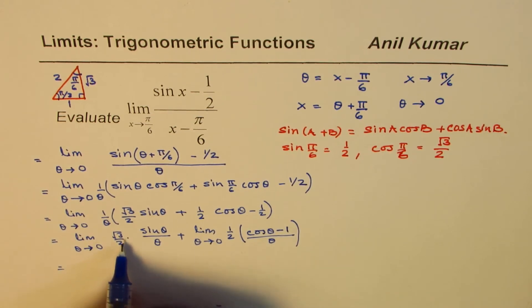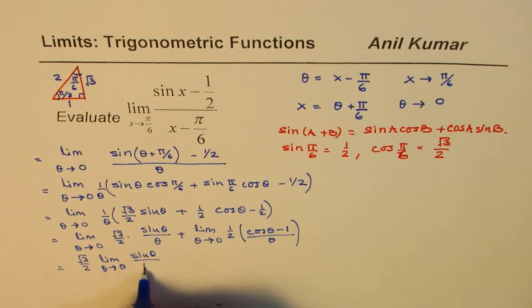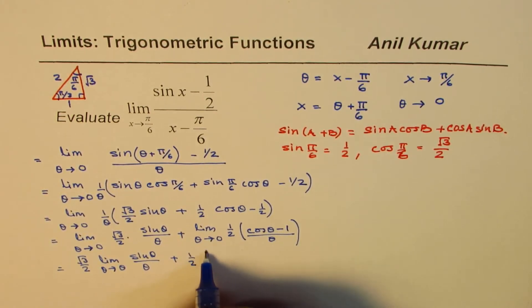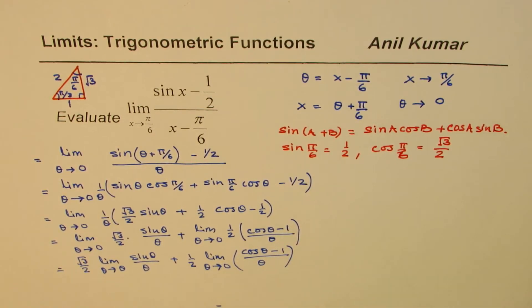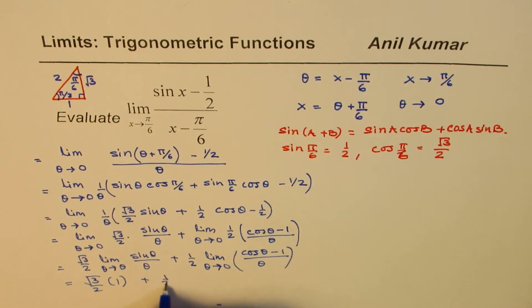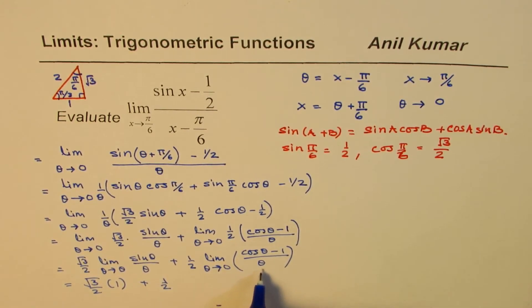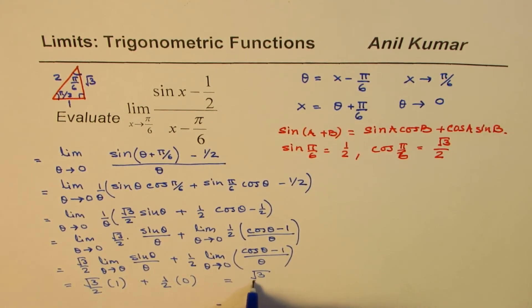The first part: (√3/2) · limit as θ → 0 of sin θ / θ. This is a fundamental limit equal to 1, so we get √3/2 × 1. The second part: (1/2) · limit as θ → 0 of (cos θ - 1) / θ, which is also a known limit equal to 0. So that term gives 1/2 × 0 = 0. The result is √3/2.